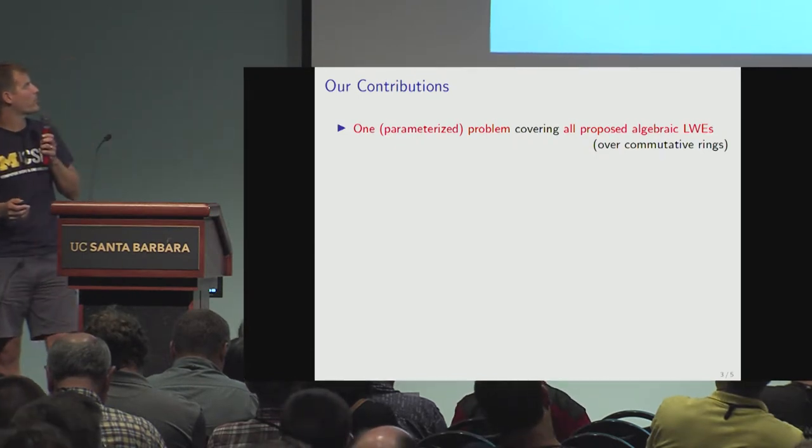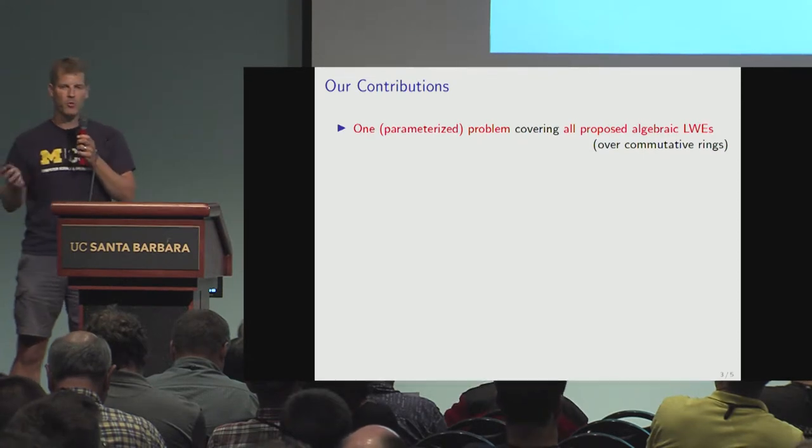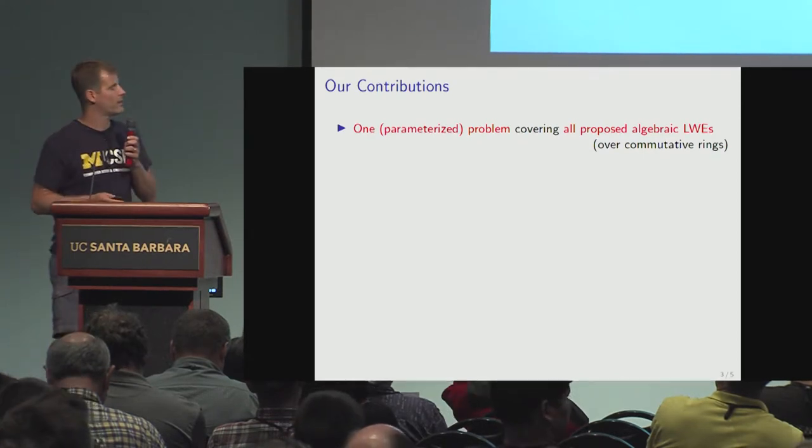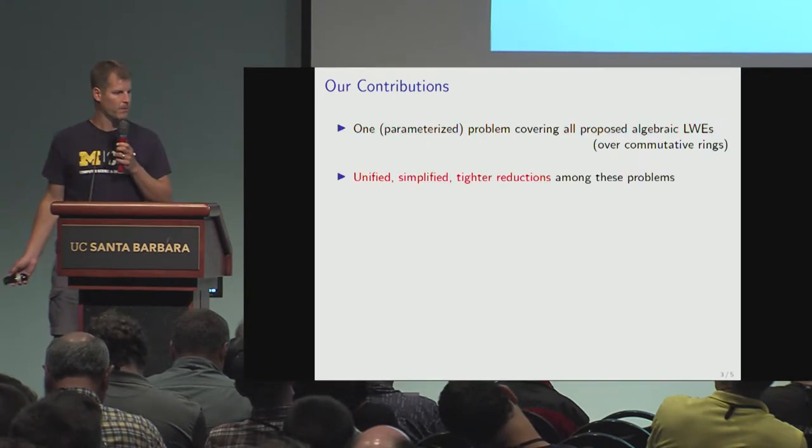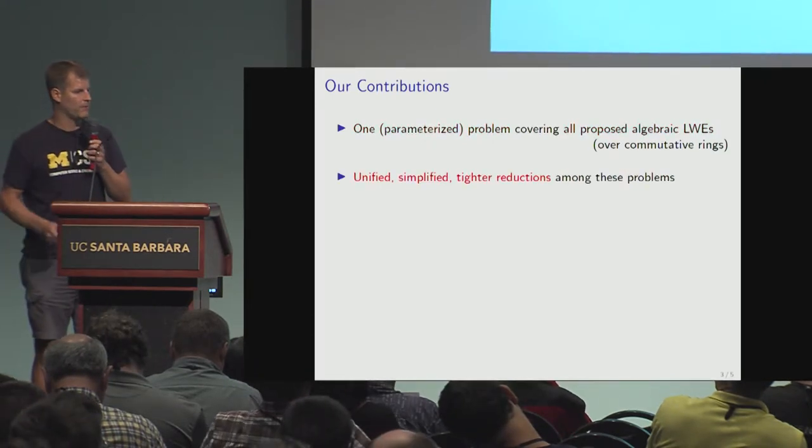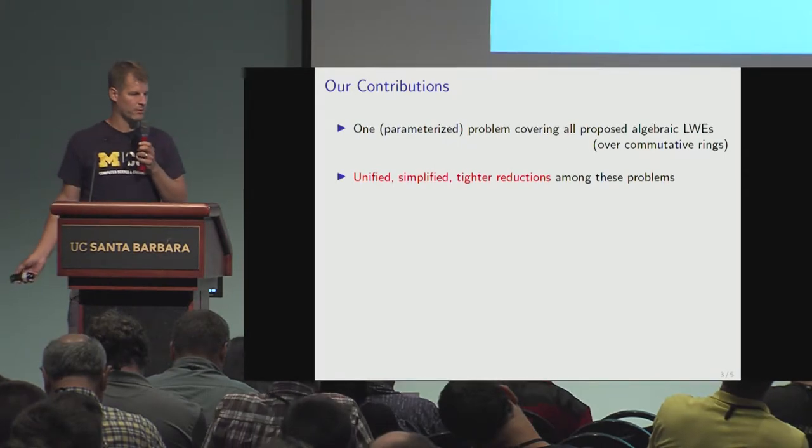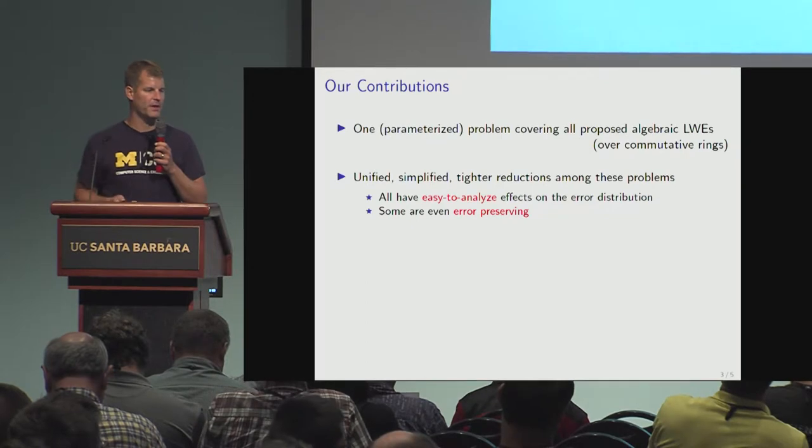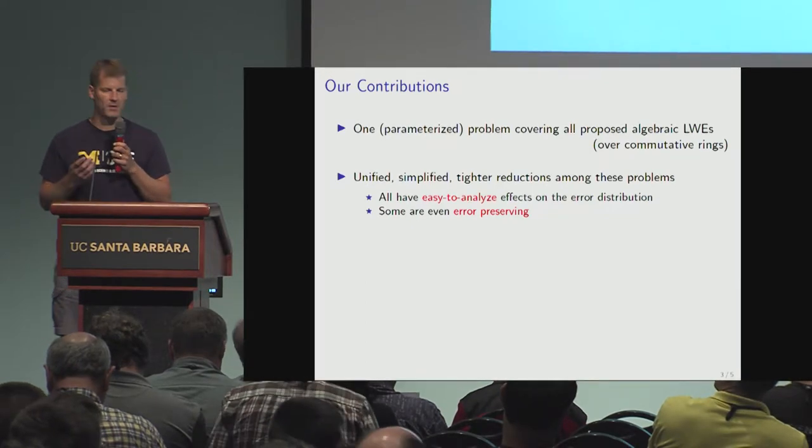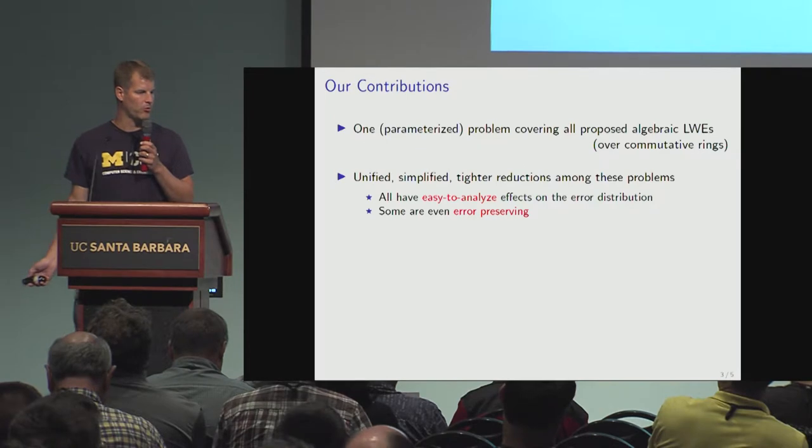We give one parameterized problem that covers all proposed algebraic LWEs in the literature defined over commutative rings. We give unified, simplified, and tighter reductions among these problems. They all have nice, easy-to-analyze effects on the error distribution. Sometimes they don't change the error at all, which is nice—error preserving.